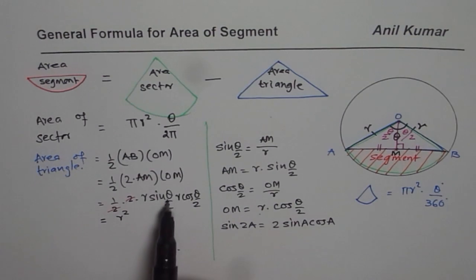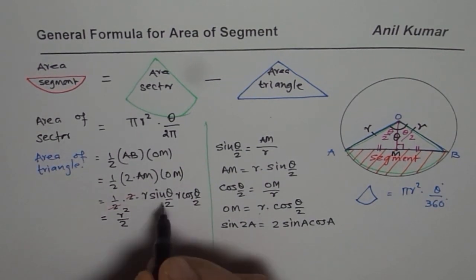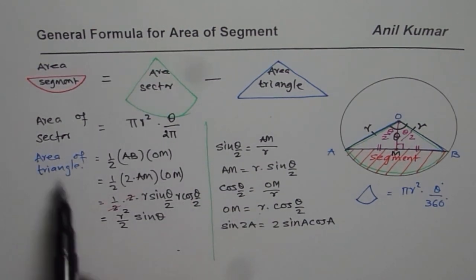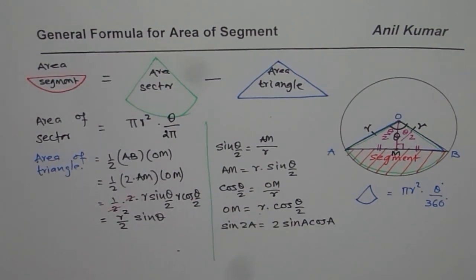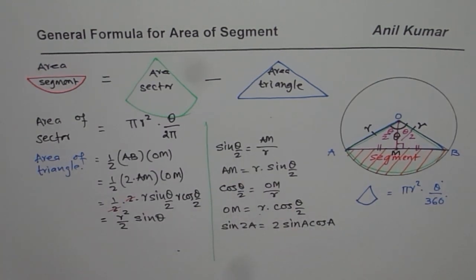So theta by 2 will give us theta, provided we have 2 times. So we say r times r is r squared, divided by 2. We could write this as sine theta also. So that is how you can get area of the triangle from here. Or you could write in theta by 2. It is one and the same thing, but you could use the formula.